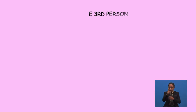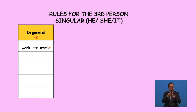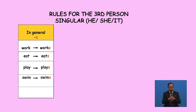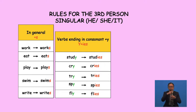To understand more in a simpler way, let's go through all the rules in a table. Generally, for the third person singular — he, she, it — we add S: work to works, eat to eats, play to plays, swim to swims, write to writes. For verbs ending in a consonant Y, we replace Y with IES: studies, cries, tries, spies, flies.